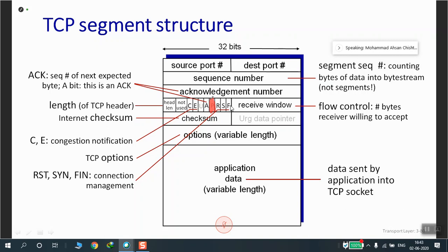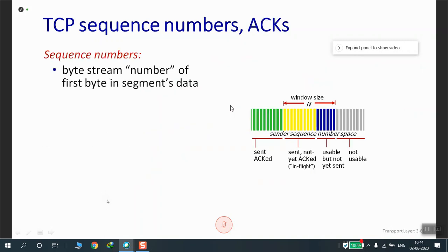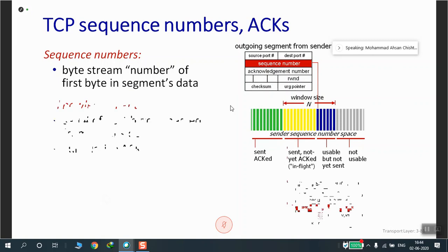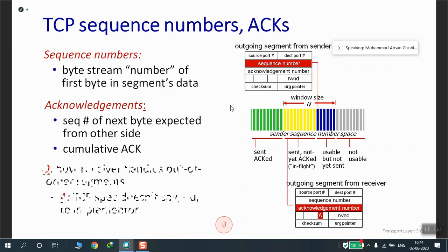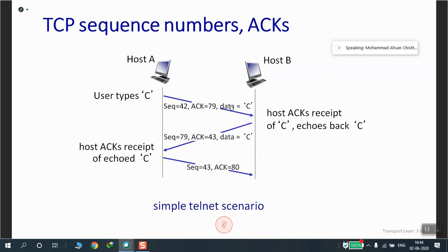This is how the TCP segment structure looks. The header covers everything from source port through the options field. An example of sequence numbers and acknowledgement numbers is given using Telnet, which is RFC 854 and runs on TCP.